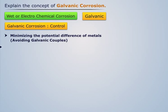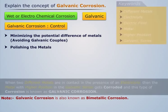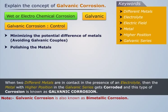Galvanic corrosion can also be controlled by polishing the metals. Note that galvanic corrosion is also known as bi-metallic corrosion.